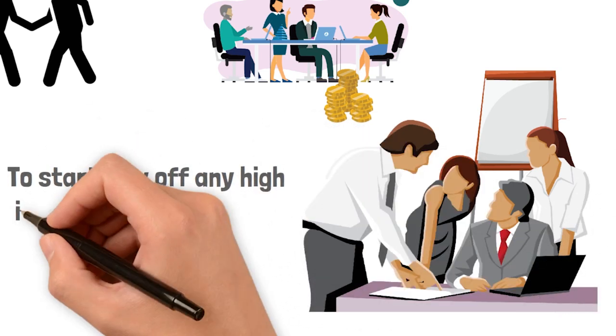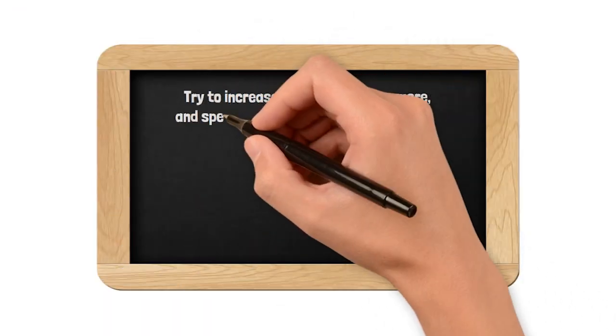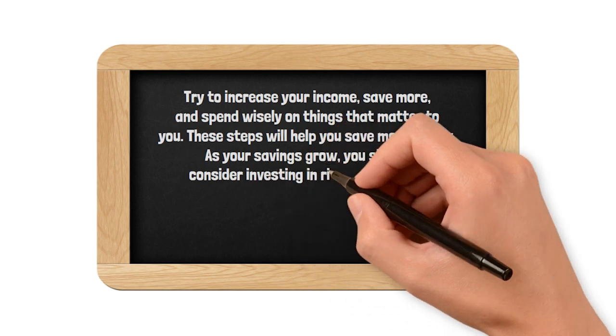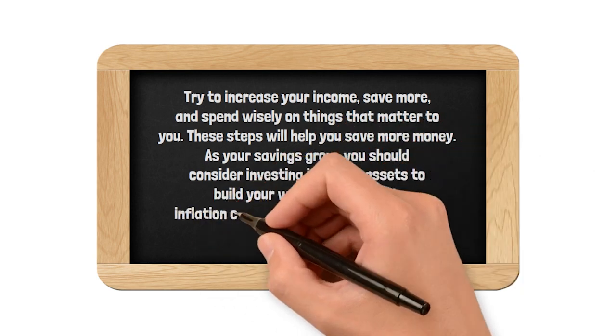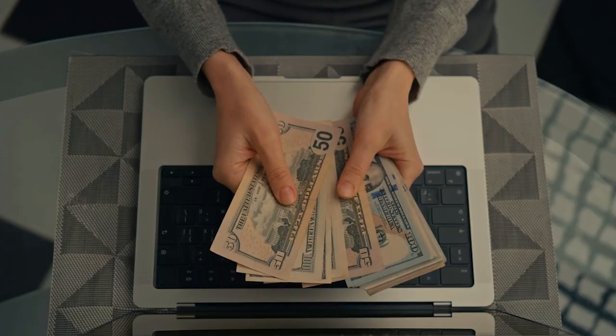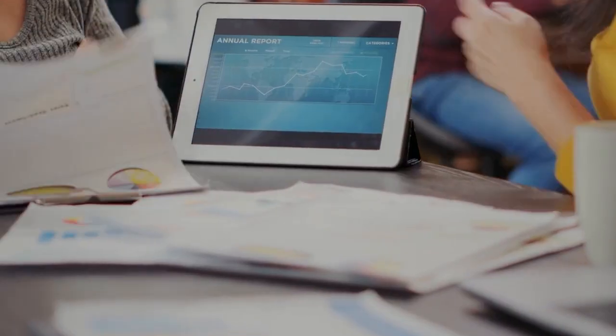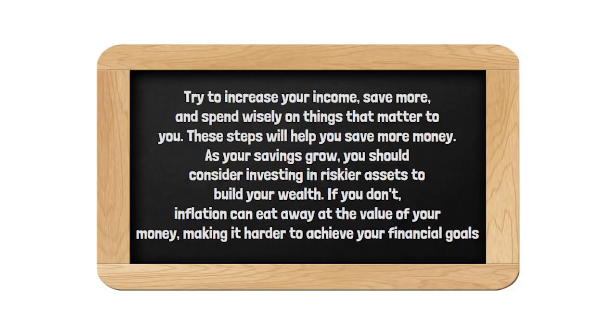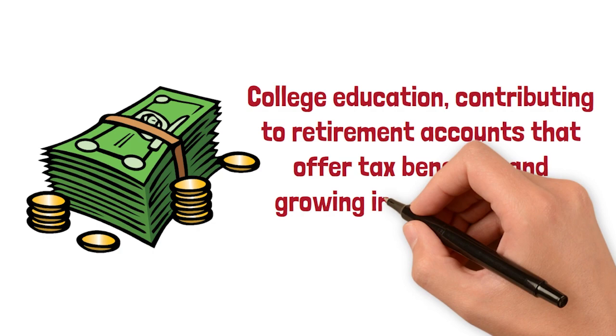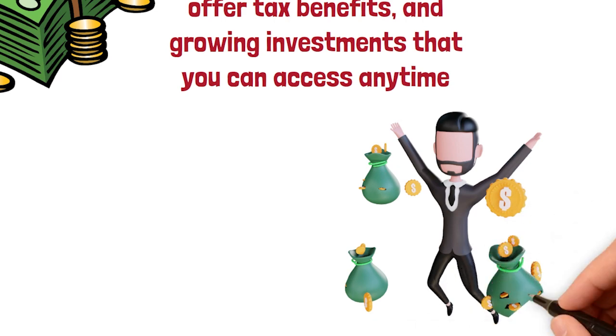To start, pay off any high-interest debts you have and focus on your budget. Try to increase your income, save more, and spend wisely on things that matter to you. These steps will help you save more money. As your savings grow, you should consider investing in riskier assets to build your wealth. If you don't, inflation can eat away at the value of your money, making it harder to achieve your financial goals. It's essential to set your financial goals to secure your future. Good credit is crucial if you want to buy things like cars or homes with low-interest loans. To achieve your goals, you'll need a financial plan. Think about saving for your kid's college education, contributing to retirement accounts that offer tax benefits, and growing investments that you can access any time. The wealth accumulation stage might take a long time, even decades, but that's normal for most people.